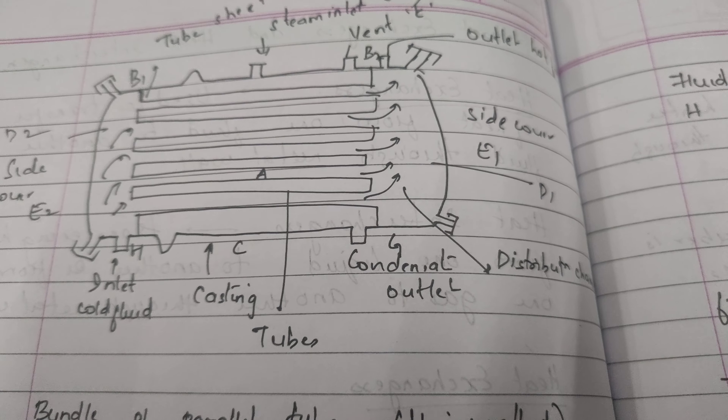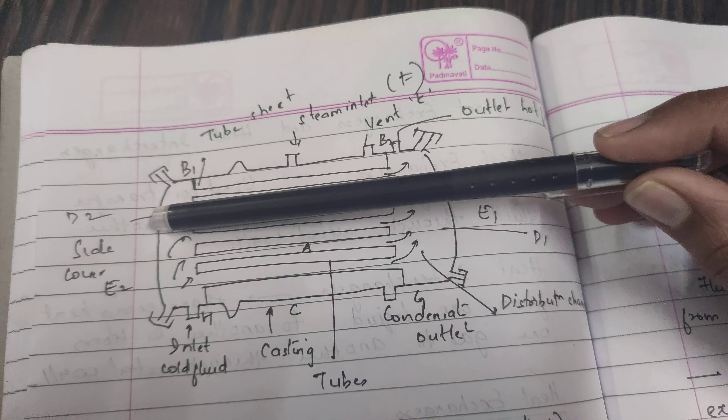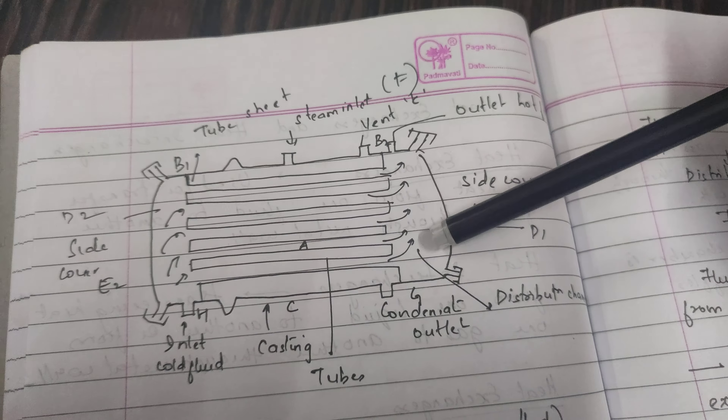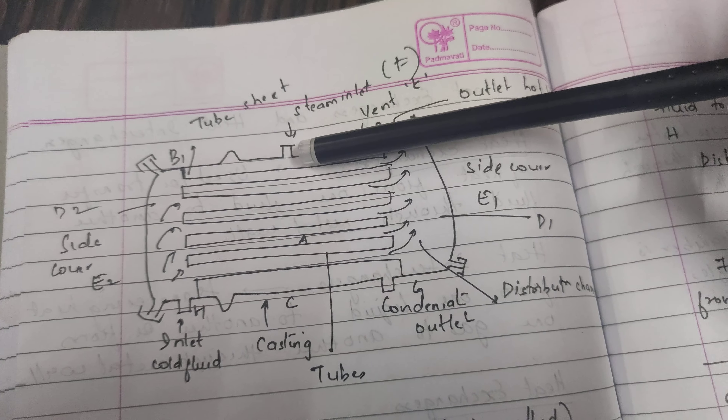A cylindrical shell or cylindrical chamber is present, having many tubes placed in it in a vertical position. You can see many inlets and outlets surrounding the cylindrical shell. The cylindrical shell contains D1 and D2, which are the distribution chambers where the flowing of liquids or fluids takes place. These are the tubes present in the chamber.